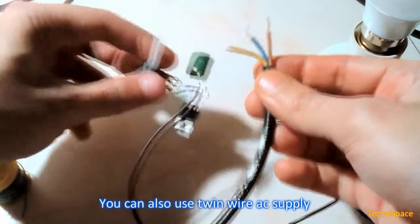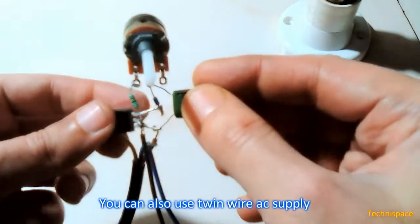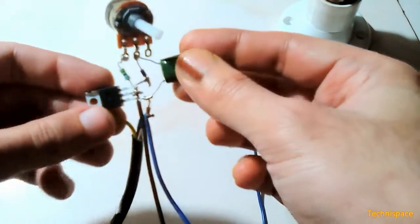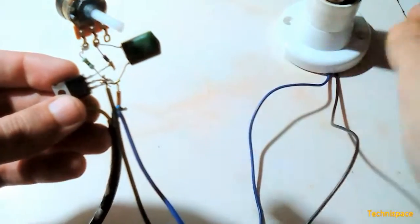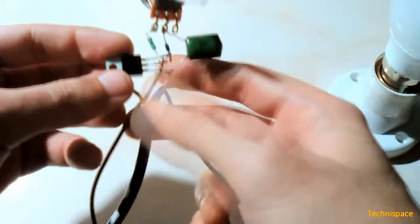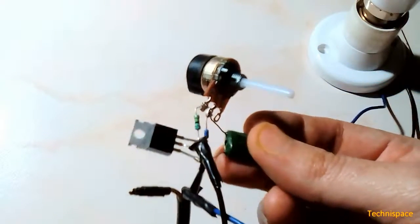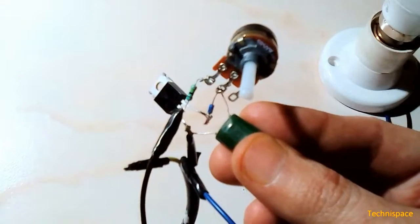Now taking power supply wire, connecting any one of these wires per circuit diagram to capacitor and other connected to any one of wire from LED. Insulating wire joins with electric tape, we can connect the power supply and test its working.